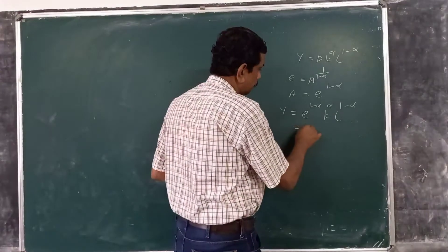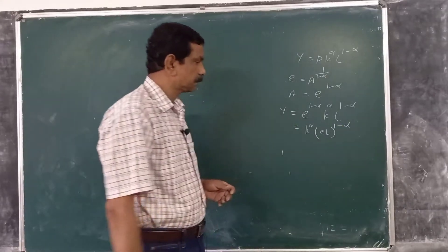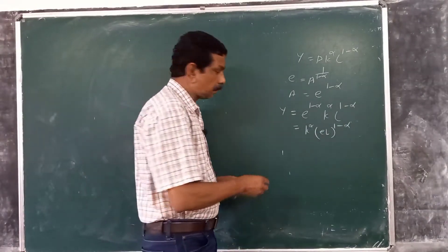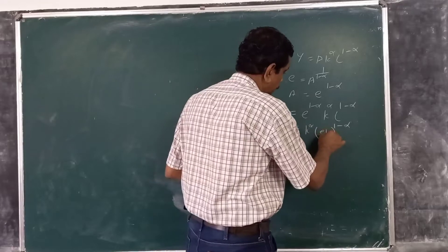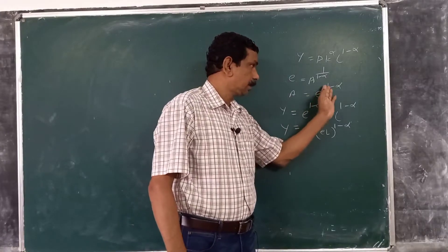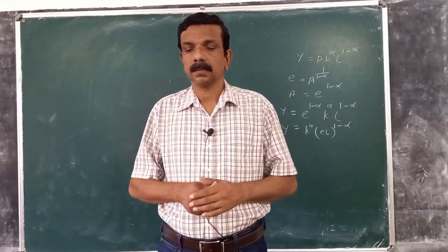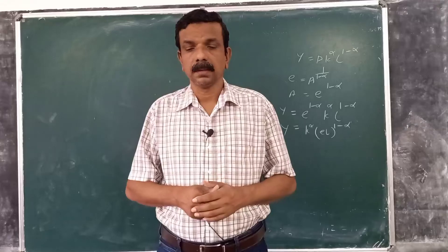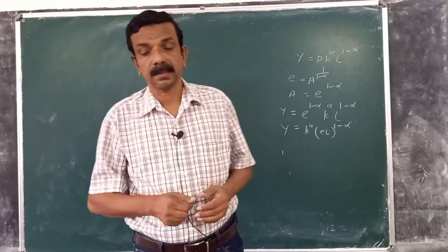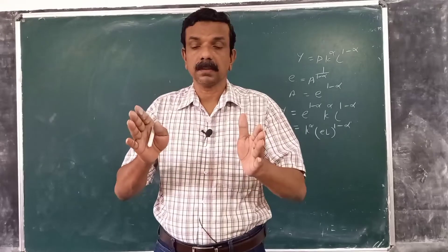This can be written as k raised to alpha times (eL) raised to 1 minus alpha. So y is equal to k raised to alpha times (eL) raised to 1 minus alpha. This is the production function, where A is given as E raised to 1 minus alpha. With this form, we can think of technology variable E as a measure of the number of effective workers.